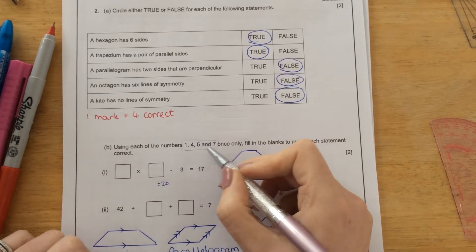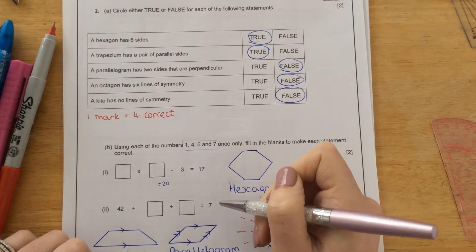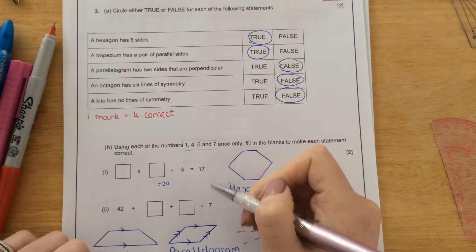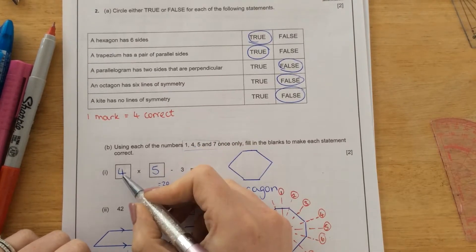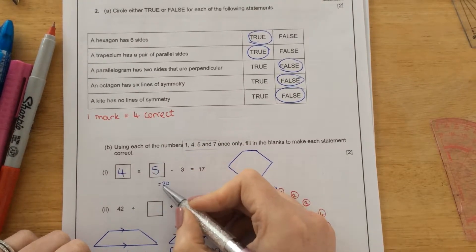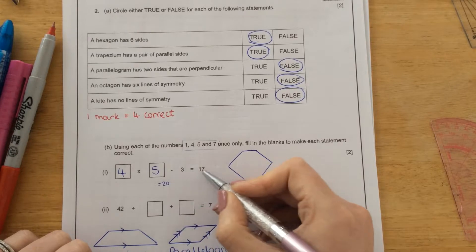So what times what using these numbers, which numbers times together to make 20? The only numbers that times together to make 20 are 4 and 5. So let's just double check. 4 times 5 is 20, take away 3 is 17.